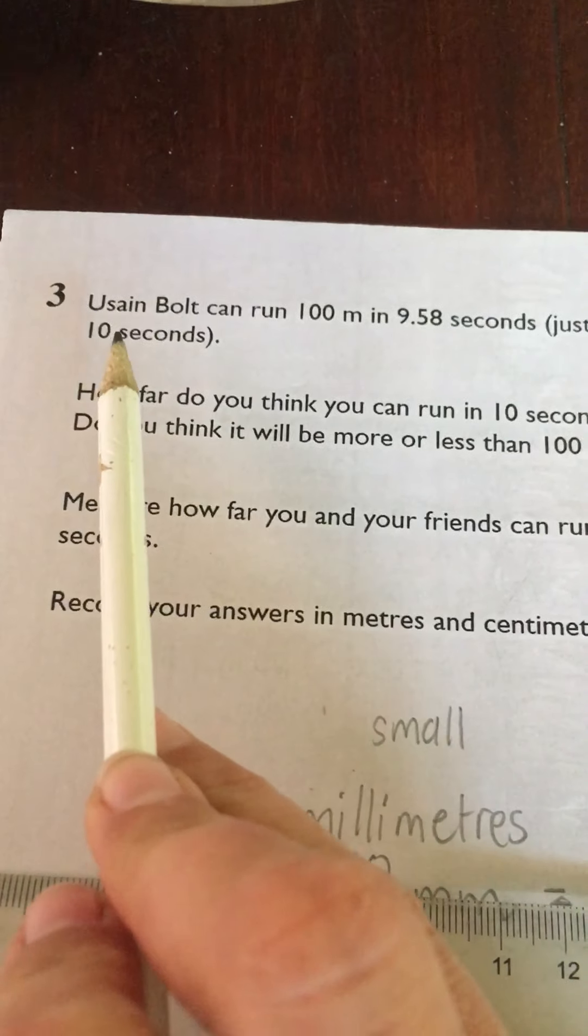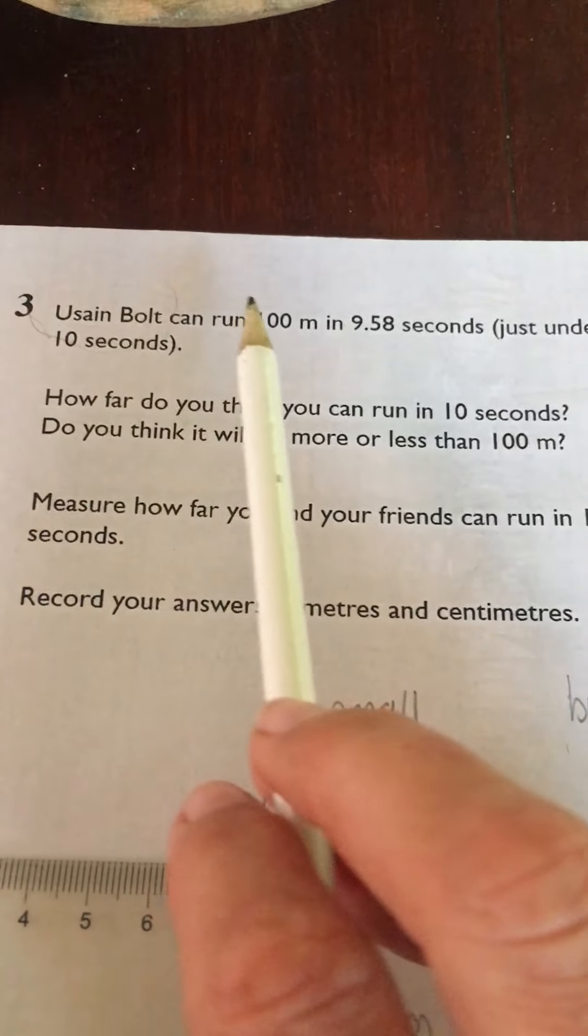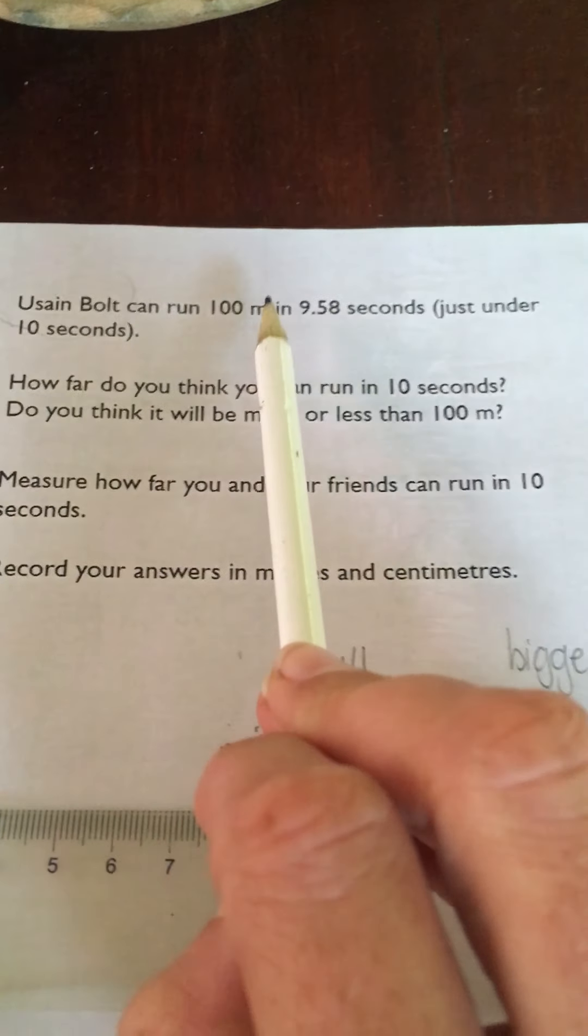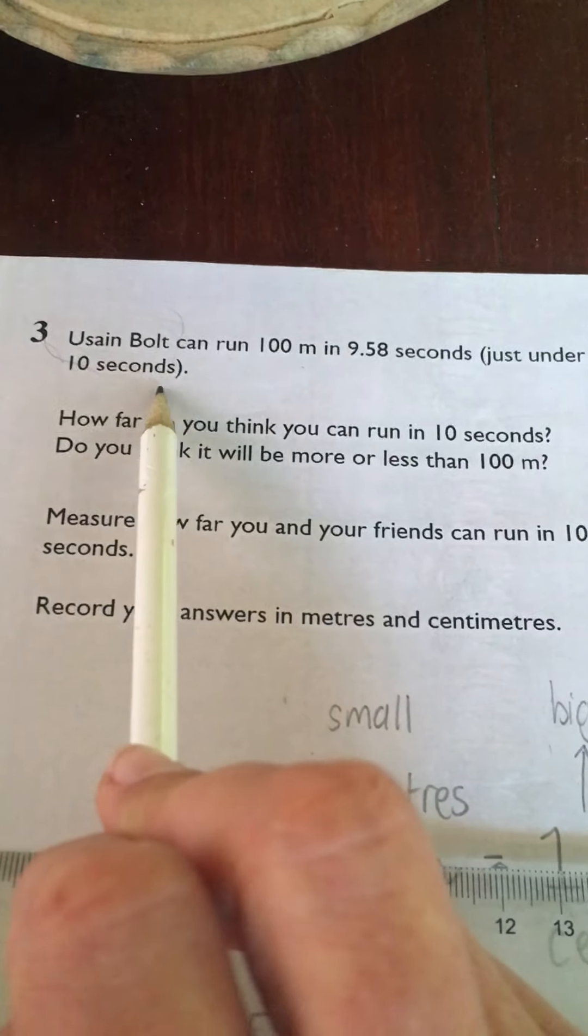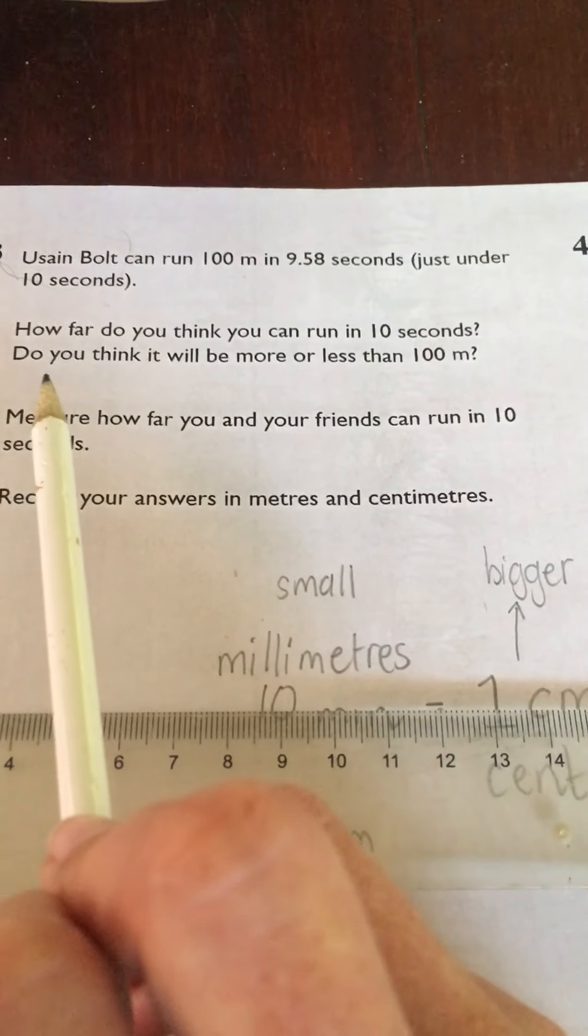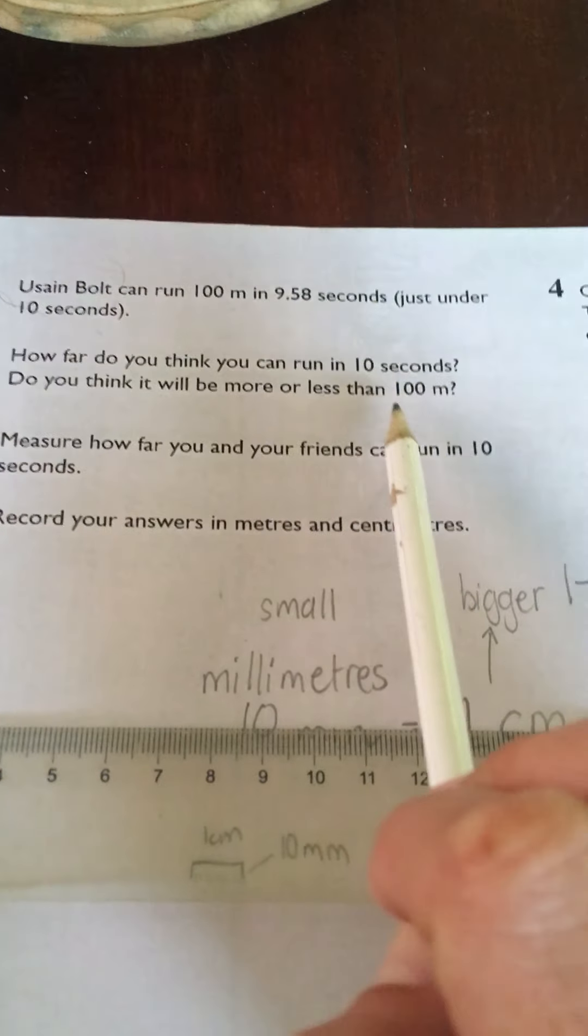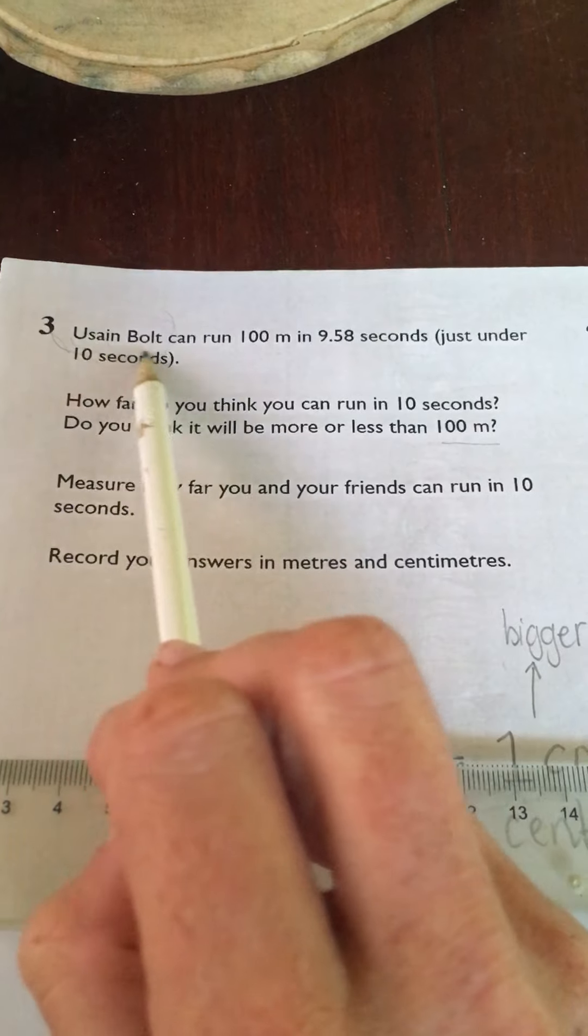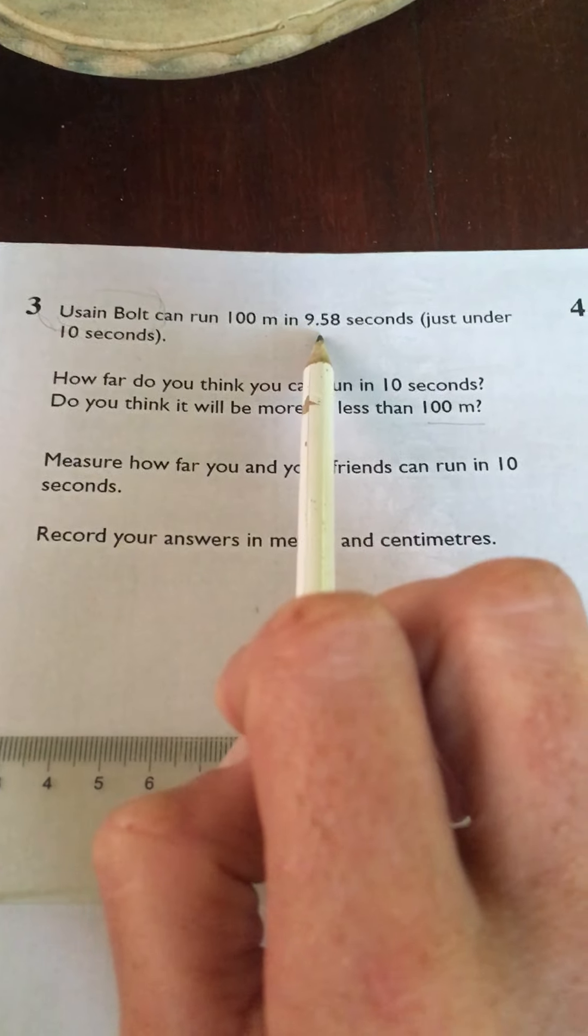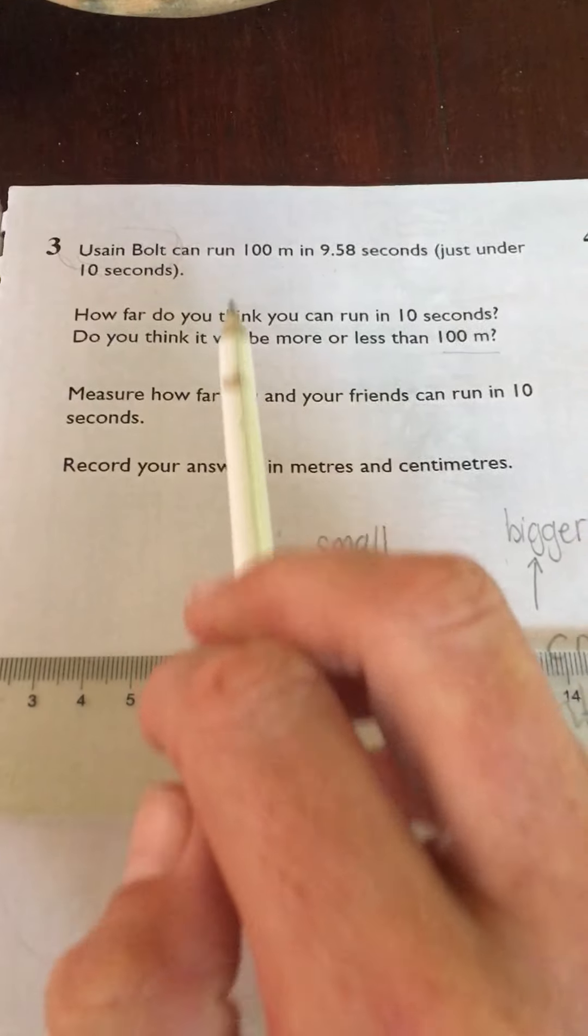It says here Usain Bolt - he ran for the Olympics for the United States. He's a very fast runner. He can run 100 meters in 9.58 seconds, just under 10 seconds. How far do you think you can run in 10 seconds, and do you think it will be more or less than 100 meters? We did this last year - it was very funny because everyone said they could run further, but if he can run 100 meters in just less than 10 seconds, it's highly unlikely that you can be faster than one of the fastest runners in the world.